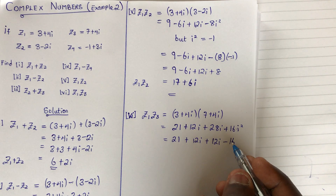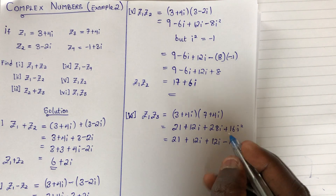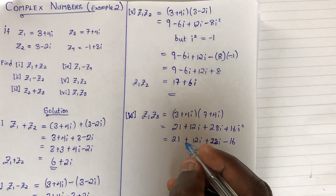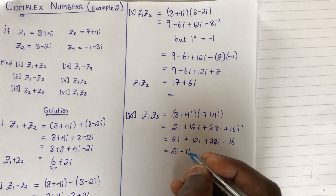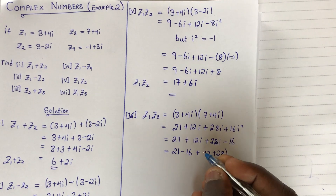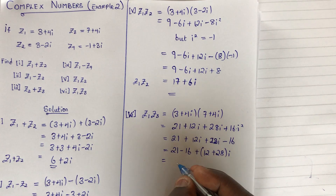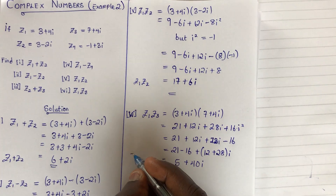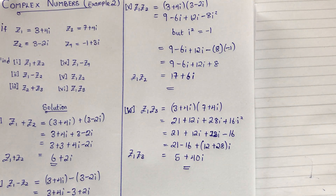Adding all real terms: 21 minus 16 equals 5. Adding all imaginary terms: 12i plus 28i equals 40i. So z1 times z3 equals 5 plus 40i. That is our final result.